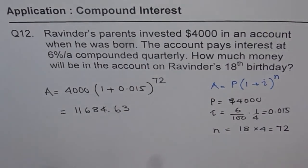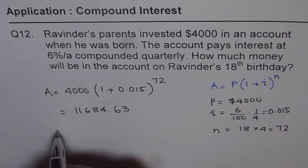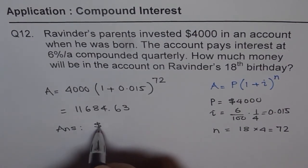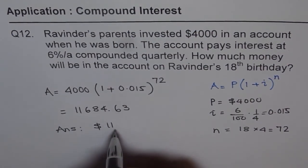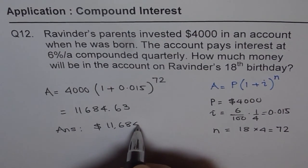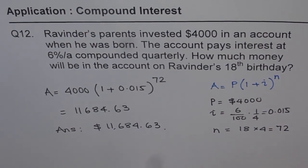It's a good idea to write the answer rounded to two decimal places whenever we are talking about amounts. So the answer will be $11,684.63. That is how we solve it. Thank you.